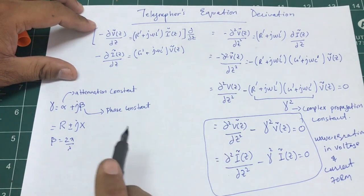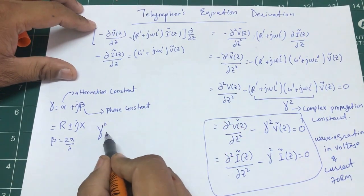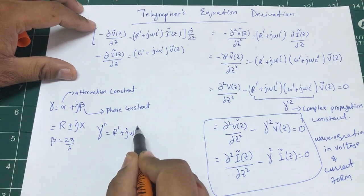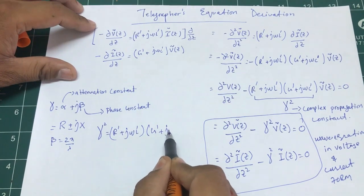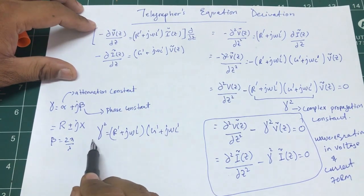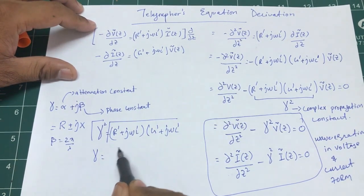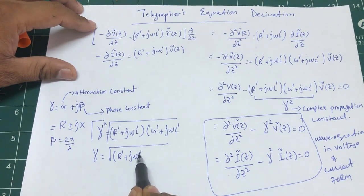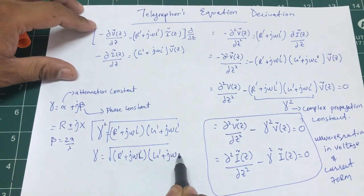One last thing about gamma: gamma squared equals (R's prime plus j omega L prime)(G prime plus j omega C prime), so gamma itself is the square root of (R plus j omega L)(G + j omega C).